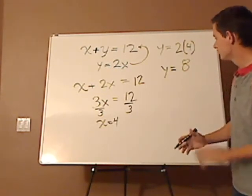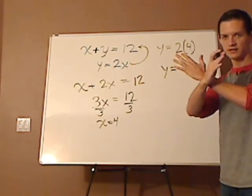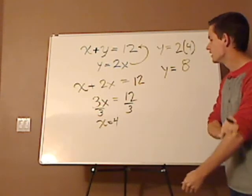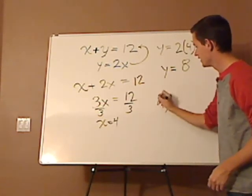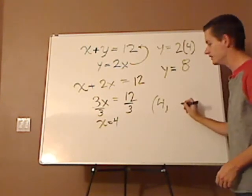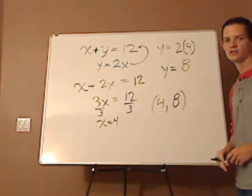So your solution is a point because you have two lines, and when they intersect, they form a point. And so your X coordinate is 4, and your Y coordinate is 8. And that is your solution.